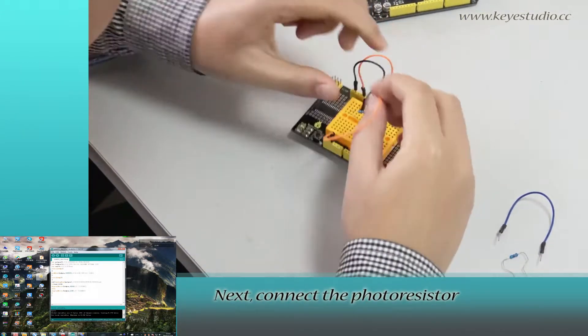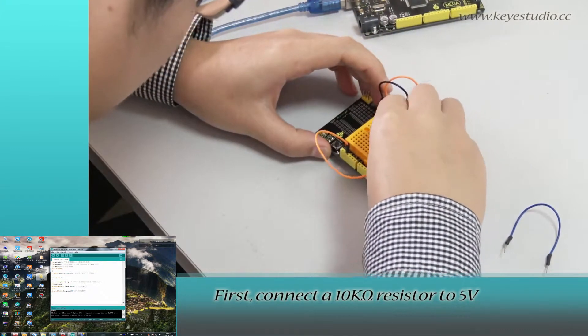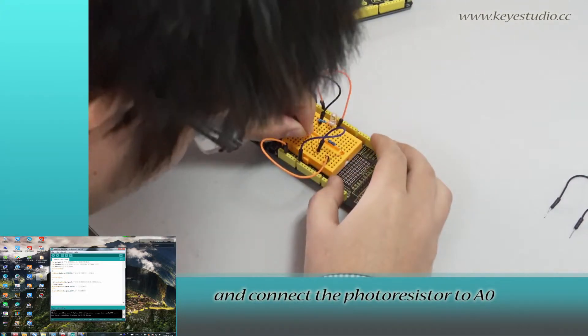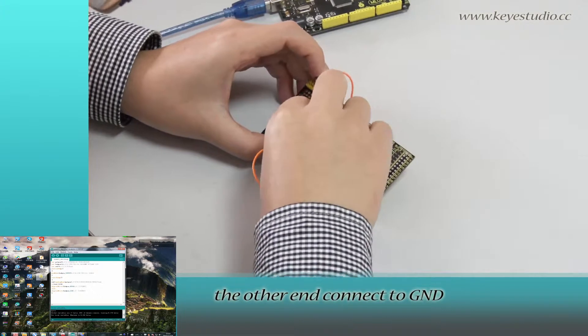Next, connect the photoresistor. First, connect a 10K ohm resistor to 5V. The other end to A0. And connect the photoresistor to A0. The other end connects to ground.